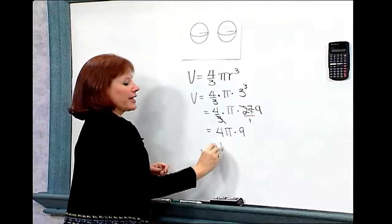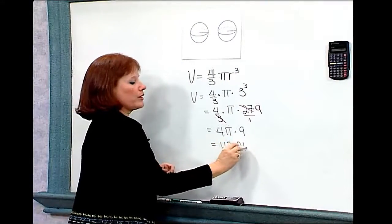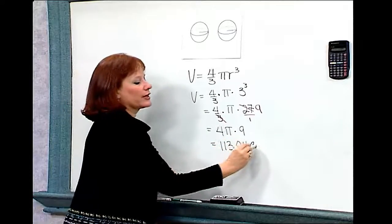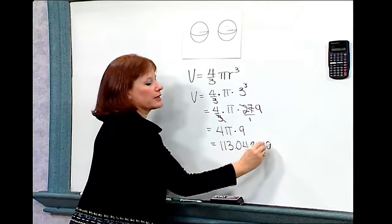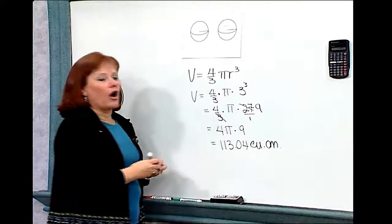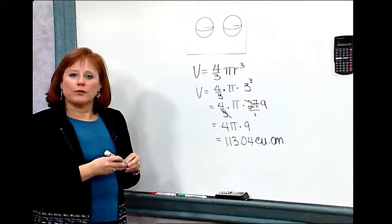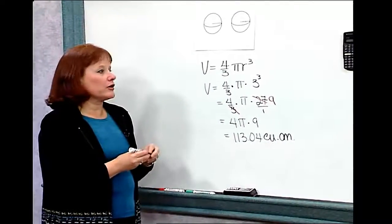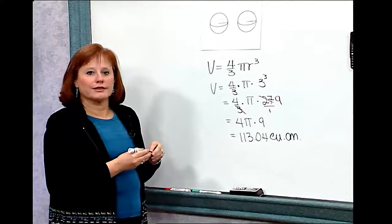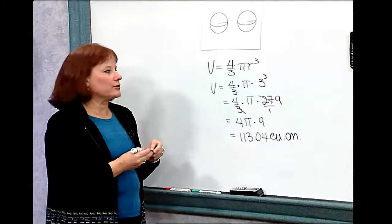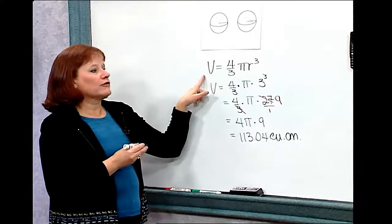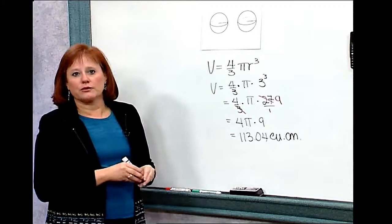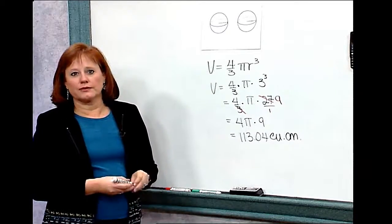So this sphere has a volume of 113.04 cubic centimeters. Although you have to memorize the formula for this particular figure, it's only one formula, and it's a fairly easy one: the volume of a sphere is four-thirds pi times the radius cubed.